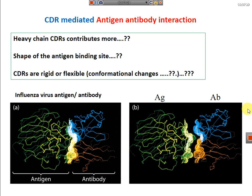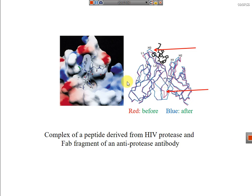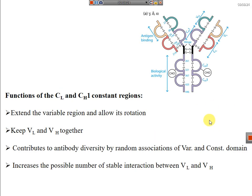Questions we must consider: do heavy chain CDRs contribute more to the shape of the antigen binding site, and are the CDRs rigid or flexible? In this figure, a peptide derived from HIV protease is binding to the Fab fragment (fragment antigen binding). Before and after binding, there is a conformational change in the polypeptide of the Fab fragment. This clarifies that there is induced fit and conformational changes when antigen and antibody bind to each other.